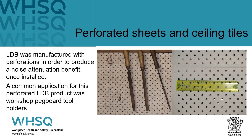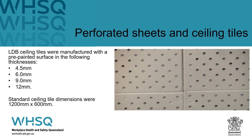Perforated LDB was often used as ceiling tiles for acoustic purposes. Different patterns of perforated ceiling tiles were used, with the difference being the number of holes per sheet. LDB ceiling tiles were manufactured with a pre-painted surface in a range of thicknesses. The standard ceiling tile dimensions were 1200 millimetres by 600 millimetres.